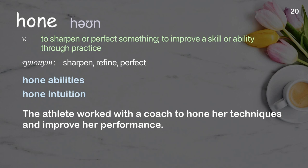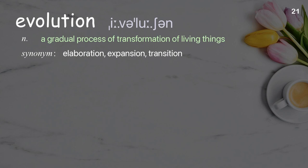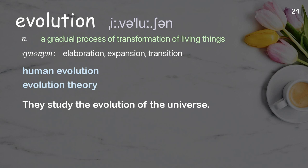Evolution: a gradual process of transformation of living things. Examples: human evolution, evolution theory. They study the evolution of the universe.